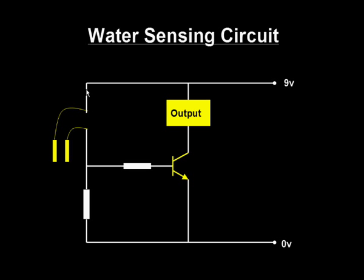In dry conditions, no current flows into the base of the transistor, so there is no output. In damp conditions, a current flows into the base of the transistor, and so your output will be triggered.